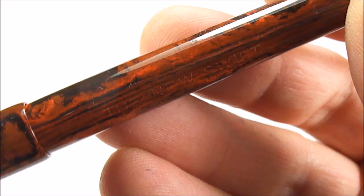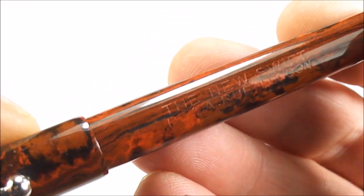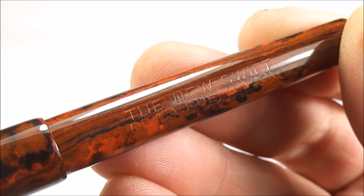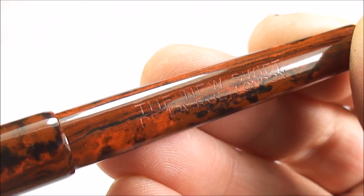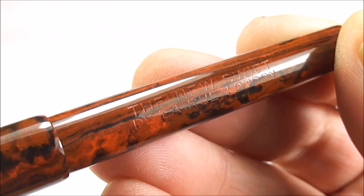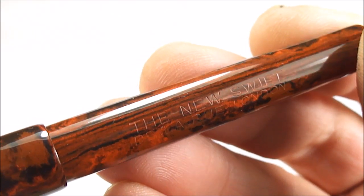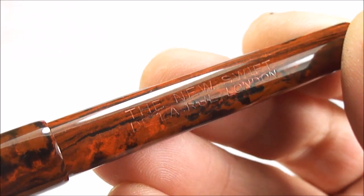And if we show you the imprint while we're looking at the pen, if I can find it over the camera, just bear with me, there we go. So I'm hoping you can actually see there, it says the New Swift, and then underneath it has Delarue London, so a lovely clear imprint to the pen there.